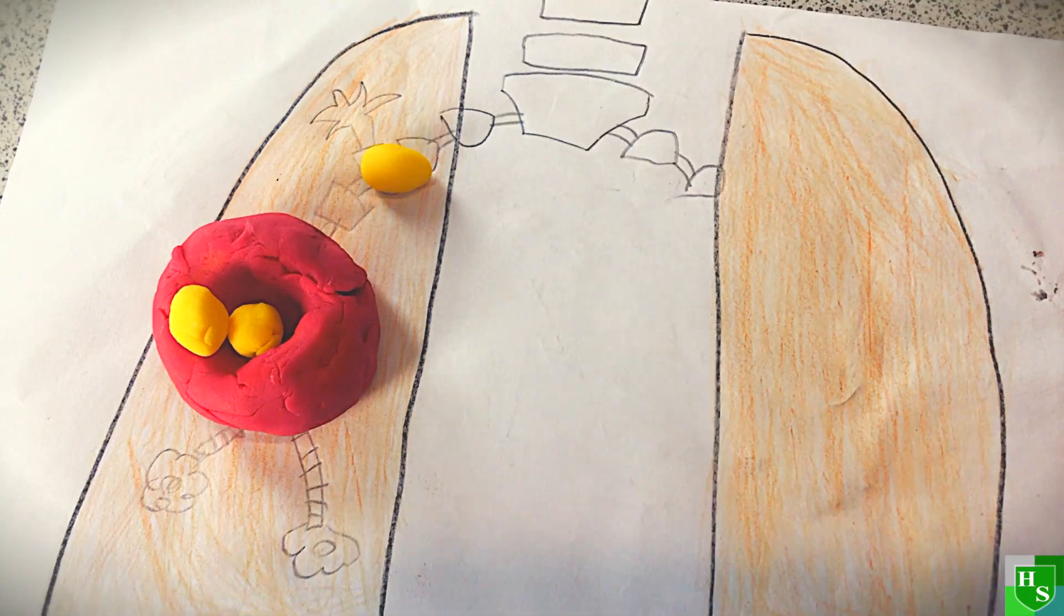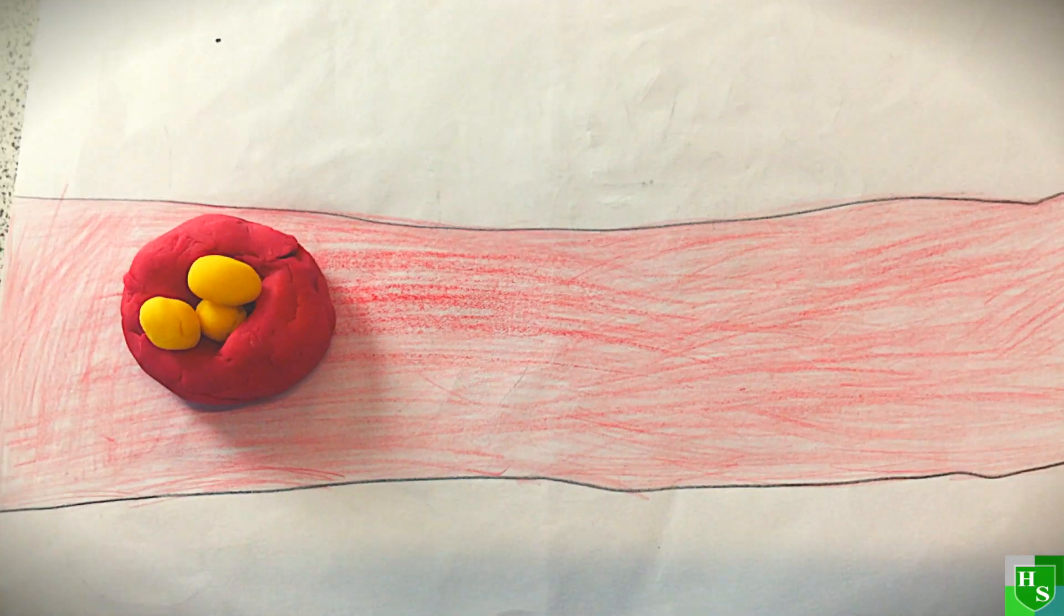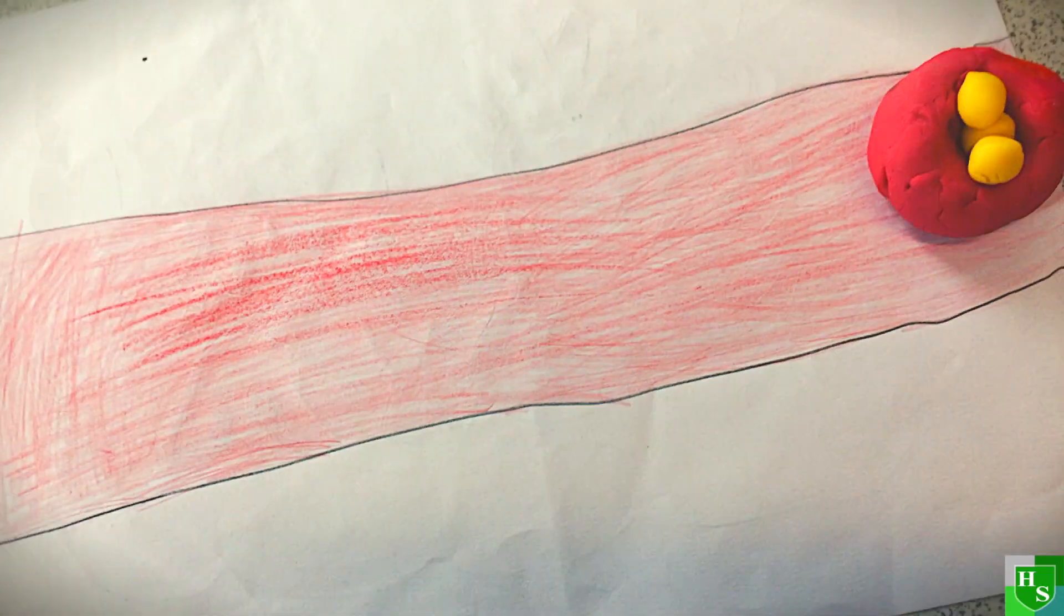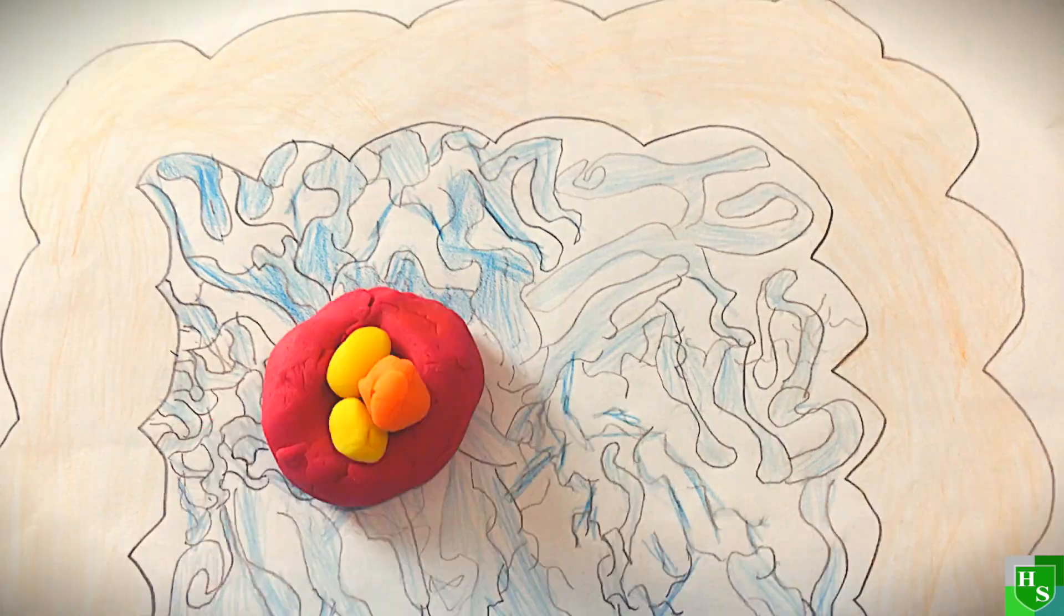Then, the red blood cell ventures into the left ventricle to the left atrium, and then the red blood cell exits to the aorta. Arteries carry the red blood cell into capillaries, where the cell takes nutrients from the small intestine.